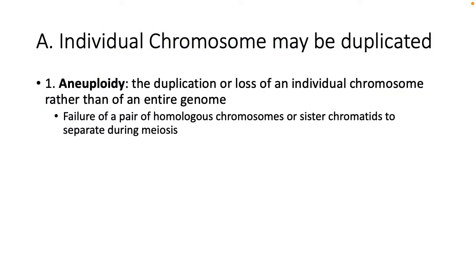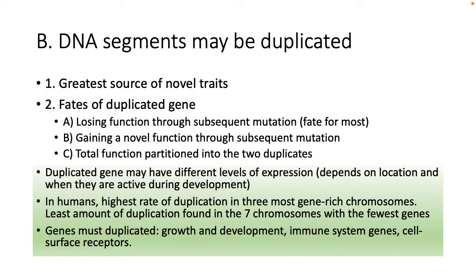Section 24.3: Evolution within genomes. Chromosomes can be duplicated, and when that happens we have aneuploidy — the duplication or loss of an individual chromosome rather than the entire genome. Failure of homologous chromosomes or sister chromatids to separate during meiosis can result in aneuploidy. DNA segments can also be duplicated, and this is the greatest source of new traits. There are three fates for a duplicated gene: loss of function, which is the fate for most; gain of a new function; or the total function gets divided between two different duplicates.